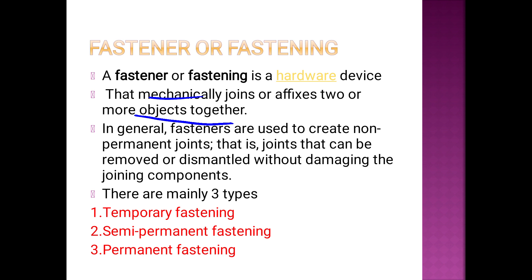There are three types of fasteners: temporary fasteners, semi-permanent, and permanent. Temporary fasteners can be removed easily. Semi-permanent fasteners require some effort to remove. Permanent fasteners, once applied, create a lasting bond that cannot be easily removed.